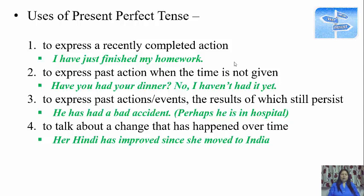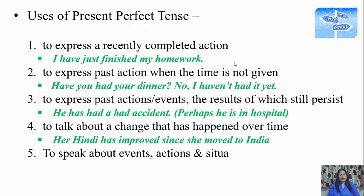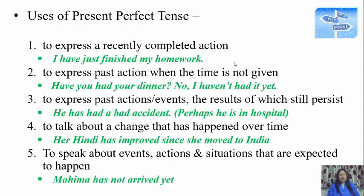You can compare present perfect tense with simple past tense — the difference is clear. In simple past, the time of action is given, but in present perfect, the time of action is not given exactly. The fifth use is to speak about actions and situations that are expected to happen. For example, 'Mahima has not arrived yet' — she is expected to arrive but has not arrived. Similarly, 'I have not completed my homework yet.'